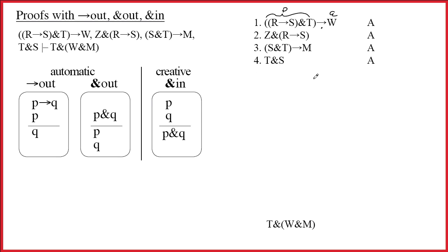So we save the script. If I can find R arrow S ampersand T all together on a line by itself, then I can write W. And I take a look. Do I have R arrow S and T together on a line someplace? And I do not.